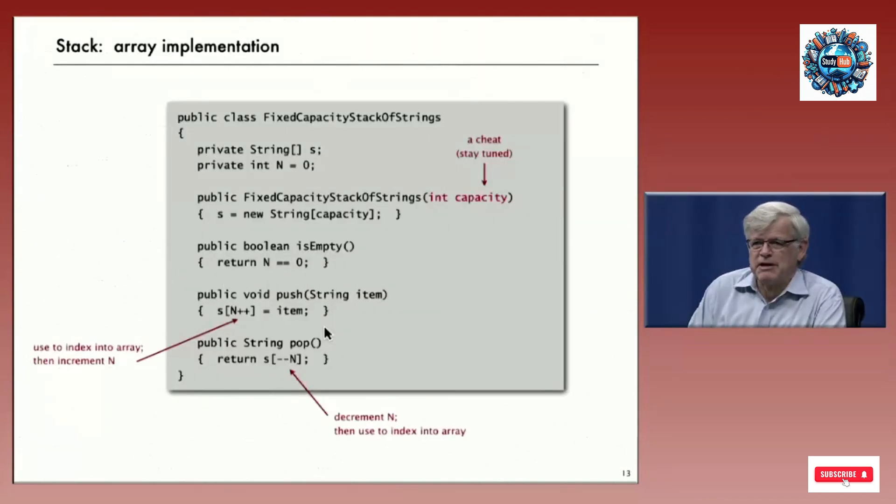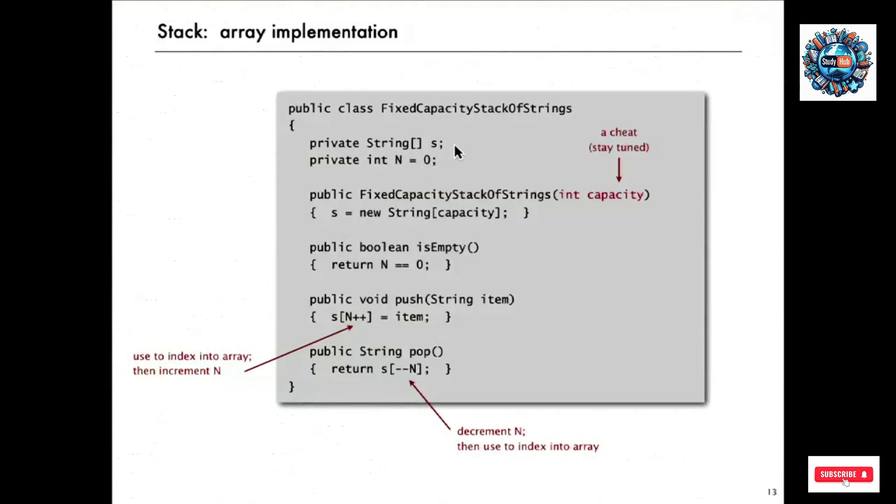Here's the full implementation of stack using an array to represent the stack. Now we have an instance variable which is an array of strings and our variable N, which is both the size of the stack and the index of the next position, next open position on the stack. This one has a constructor and the constructor creates the array. We're cheating in this implementation to keep it simple - we'll take care of this cheat in a little while - by requiring the client to provide the capacity of the stack. In a few applications, this might be fine. But in many applications, that's too onerous a requirement. The client really can't know how big the stack is. The client might have a lot of stacks that need to be maintained simultaneously at different times and various other things. So we need to remove this cheat and we will.